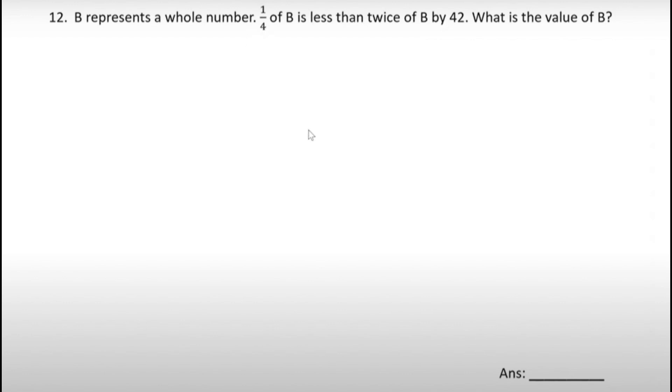No, wrong. One quarter of B means B is four units and you're only looking at one unit. So maybe we draw four units for B but we shade like one unit. So that is one quarter of B.